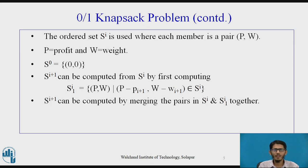Then, si+1 can be computed by merging the pairs in si and si1 together, that is by taking a union of the pairs in si and si1 respectively.